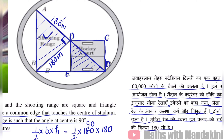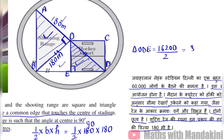Ab yeh jo humare paas triangle hai OBD, mein OE jo hai woh hai ek lumb yani perpendicular, kyunki vurgh hai toh 90 degree ka angle hoga. Toh ab hume yeh bhi pata hai ki jab humara samdwibahu tribhuj hota hai yani isosceles triangle — kyunki yeh bhi radius hai aur yeh bhi radius hai — toh humara jo lumb hota hai, humara perpendicular, woh opposite side ko do equal parts mein divide kerta hai. Yani triangle ko dho barabar shetrifal wale bhaago mein vibhajit kerta hai. Toh hum yeh kahein ki jo humara triangle AODE hai, uska area ho jayega pure OBD ka aadha. Aur OBD ka area hamara OAB ke equal hoga, yani 16,200 divide by 2, toh yeh hamein mil gaya 8,100 meter square.